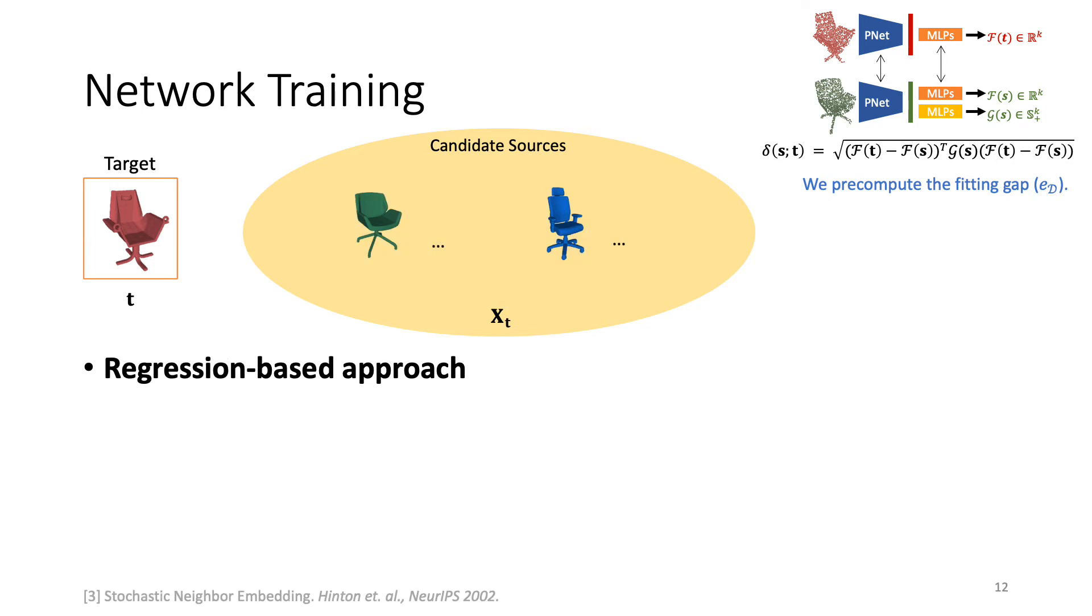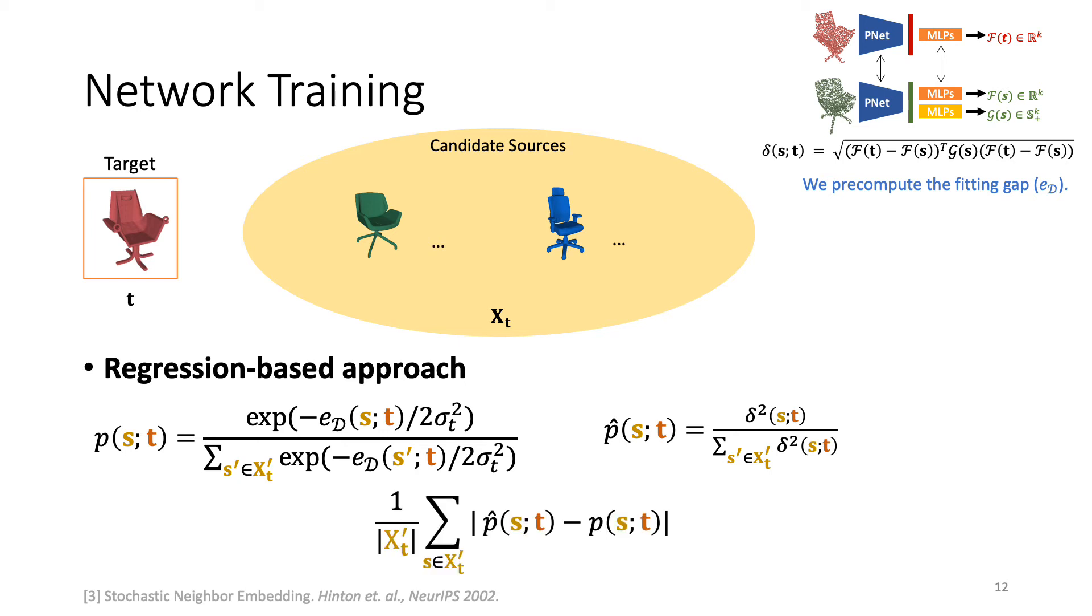Our second approach is the regression-based approach. For a given query, we also have a set of candidates XT with pre-computed fitting gaps. Given a query T and source S, we want the proportions of the embedding distance, P hat, to be similar to the proportions of the fitting gaps, P, over the set of candidates XT. We use an L1 loss to enforce this.